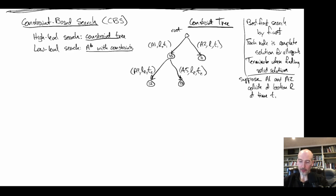As we continue building the tree deeper, with more constraints, eventually we will find an optimal solution at a leaf. Running CBS with a constraint tree and an A* solver that respects the constraints, we will find an optimal solution — though not necessarily efficiently.